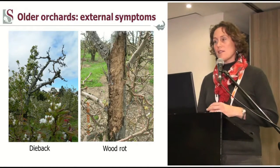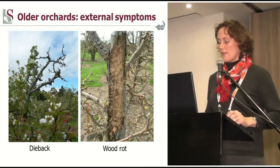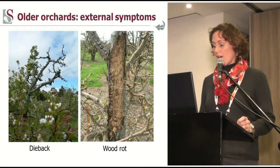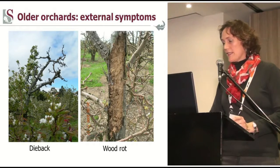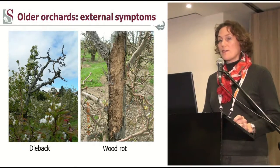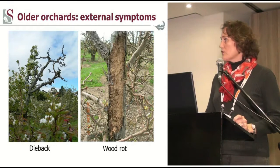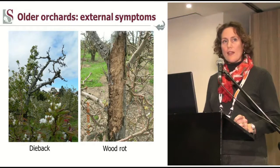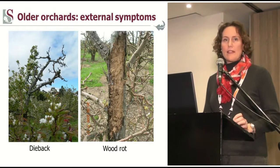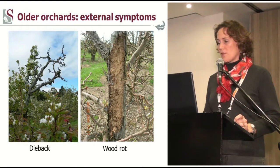Now we look at older orchards. The typical symptoms of cankers and wood rot that we can find are dieback on the left-hand side, and also wood rot — specifically a brown wood rot on the right-hand side. There are two different types of wood rot: white and brown. The wood rot pathogens we find normally usually cause white rot, so brown rot was a bit singular.